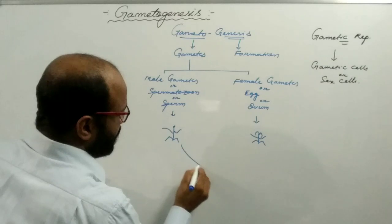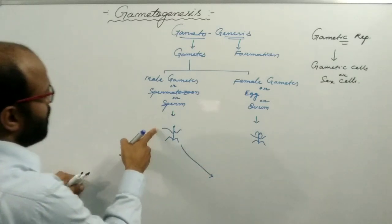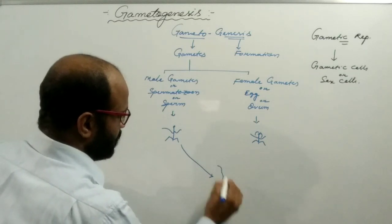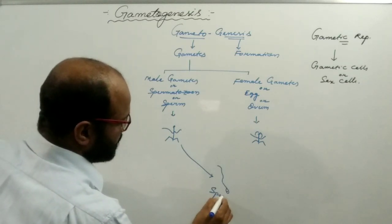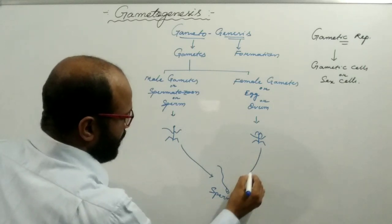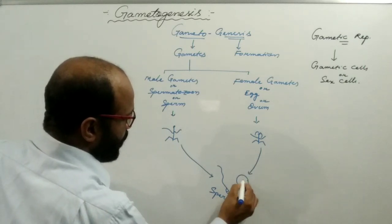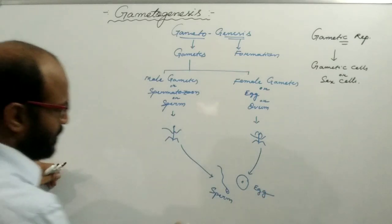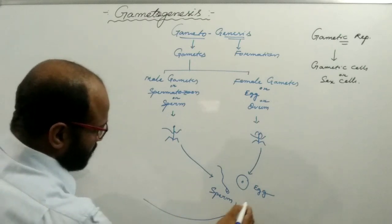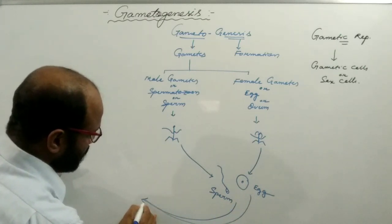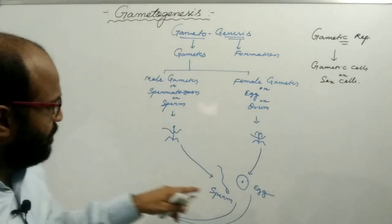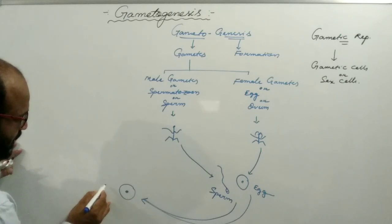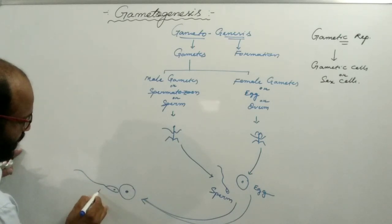At the time of puberty, the male individual starts to produce sperm or male gametes, and the female individual starts to produce ovum or egg. By the process of copulation or intercourse, the male and female gametes fuse with each other, and this process is known as fertilization.